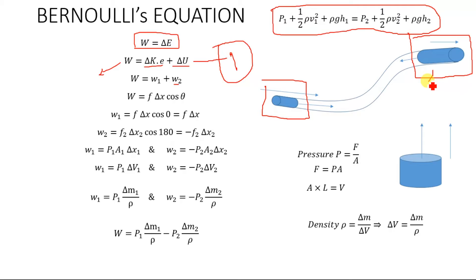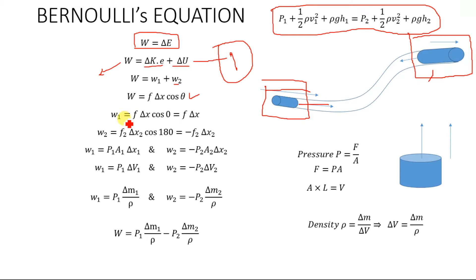When we account for direction, we use F·Δx·cosθ, the dot product of force and displacement where A·B equals AB·cosθ. At the first end, the fluid flows in the same direction as the normal to the area, so θ equals zero. Therefore W1 equals F·Δx, since cos(0) equals one.